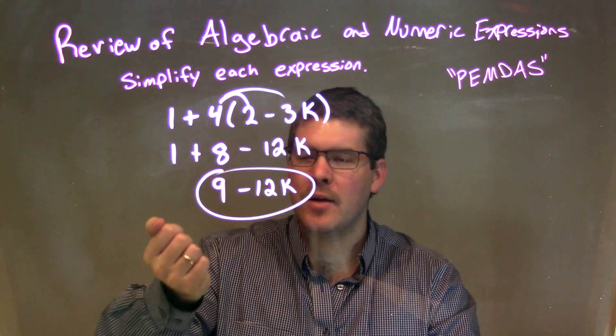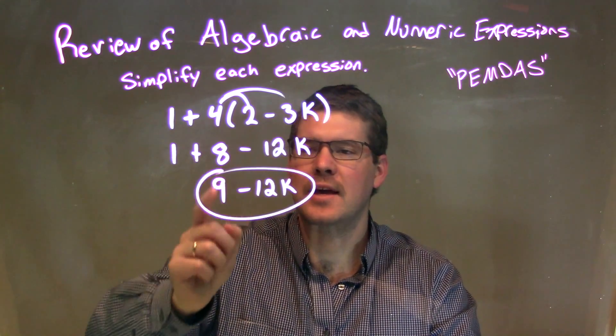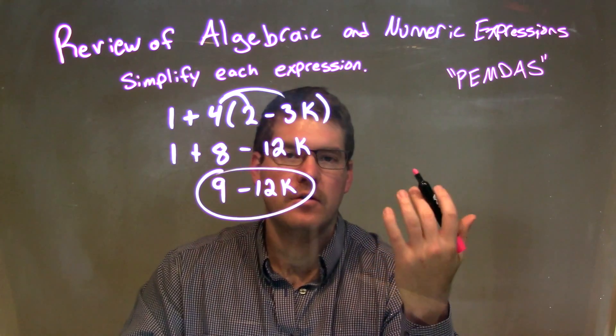At this point, I had to combine my like terms. The only like terms were the numbers. 1 plus 8 gave me a 9. Then I brought down the minus 12k. So again, our final answer here is just 9 minus 12k.